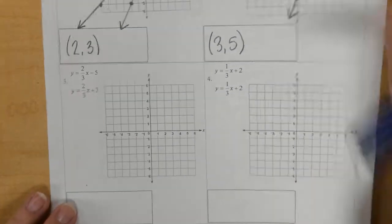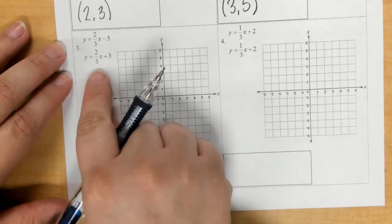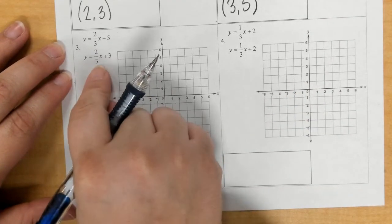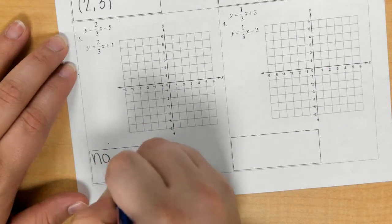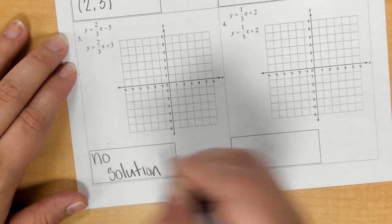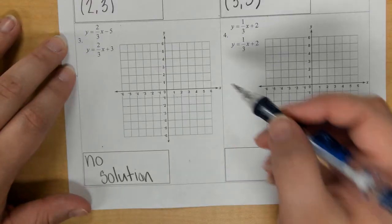In number 3, I see that my slopes are exactly the same. So I know that these should be parallel lines, which means the answer is no solution. But I need to graph them to get full credit.